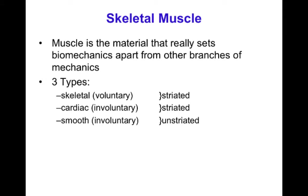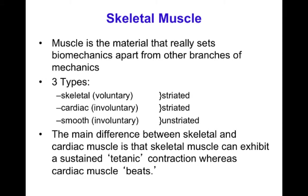Striated refers to the structure — the fact that skeletal and cardiac muscles have a very well-organized structure of their contractile proteins that gives rise to striations. A really important difference is that skeletal muscle can exhibit a sustained contraction, called a tetanic contraction, which is important for its functions. Cardiac muscle cannot — it can only twitch and relax, and that's the heartbeat. It's equally important that cardiac muscle can't undergo a sustained contraction as it is that skeletal muscle can.